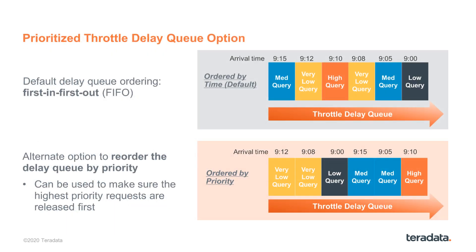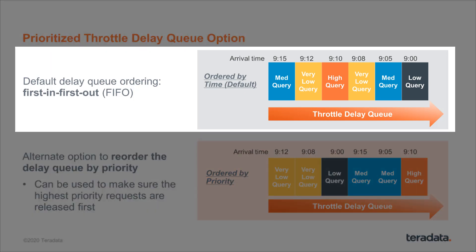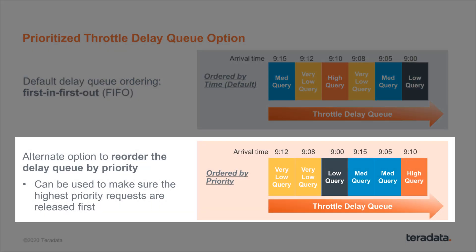One of the new features is the ability to prioritize the delay queue. Prioritizing the delay queue sorts all queries waiting to run by their priority scheduler priority, so that higher priority requests are always guaranteed to be released ahead of any lower priority requests. The default is traditional first-in, first-out ordering, where a query arriving at 9 o'clock — even if it's low priority — is first released. With the prioritize delay queue option, the highest priority query, no matter when it arrived, is released first, provided its throttle counter is below the limit and it's a candidate to be released.